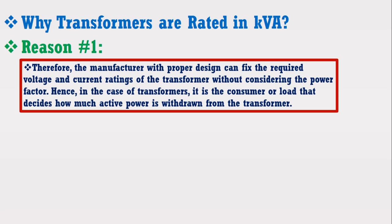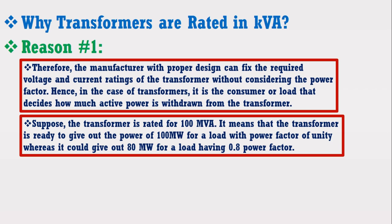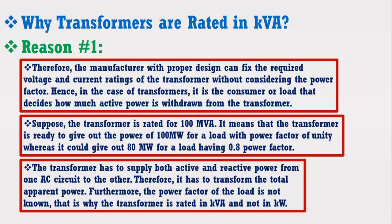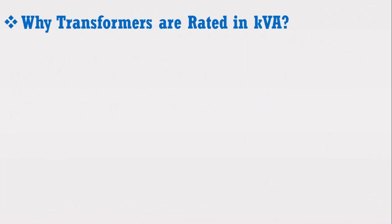In the case of transformers, it is the consumer or load that decides how much active power is withdrawn. Suppose the transformer is rated for 100 MVA — it means it is ready to give out 100 MW for a load with a power factor of unity, whereas it could give out 80 MW for a load having 0.8 power factor. Thus, the transformer has to supply both active and reactive power from one AC circuit to the other, and therefore it has to transform the total apparent power. The power supplied depends upon the power factor of the load, which is not known at the time of manufacturing. That is why the transformer is rated in kVA and not in kW.